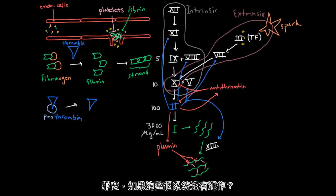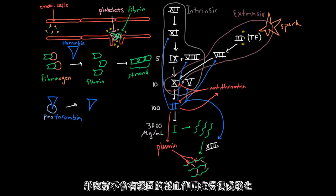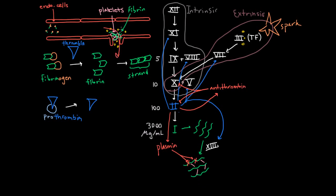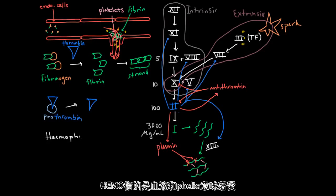So what if this whole system didn't work? I don't mean the negative feedback, but I mean the whole clotting system. Well, if it didn't work, then you wouldn't form a stable plug here, and you would get lots of blood pouring out of your damaged endothelium. And so what we call that is hemophilia. Hemo refers to blood, and philia means love. So people who have hemophilia love to bleed.